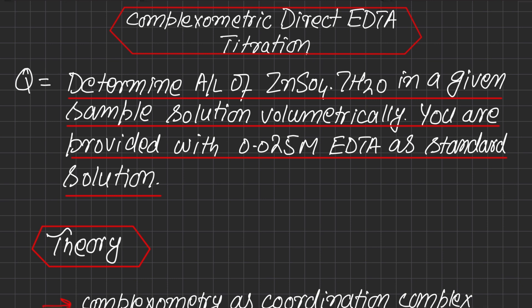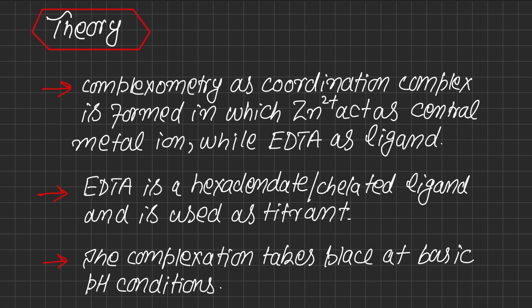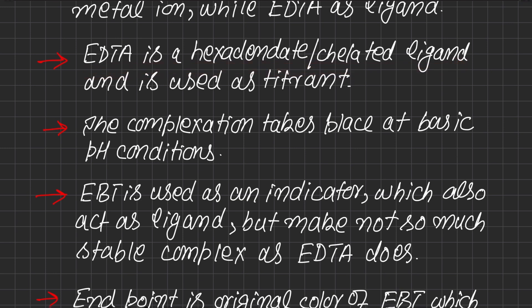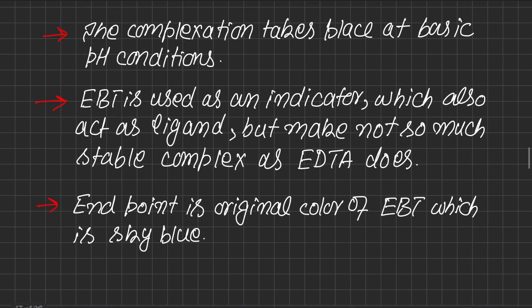This titration is called a complexometric titration because a coordination complex is formed between metal and ligand. The zinc ions, which are our analyte, act as the central metal atom or ion, whereas EDTA (ethylene diamine tetra-acetic acid) acts as the ligand. EDTA is not a simple ligand but a hexadentate chelating ligand — 'chelated' means it forms a ring with the metal, and 'hexadentate' means it forms six coordinate covalent bonds with the metal at one time.